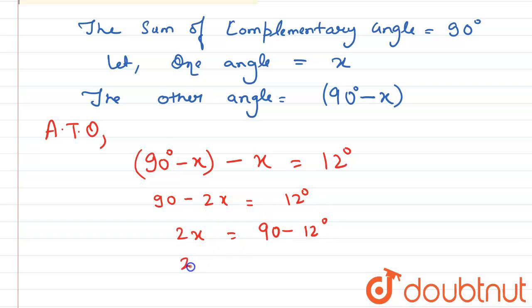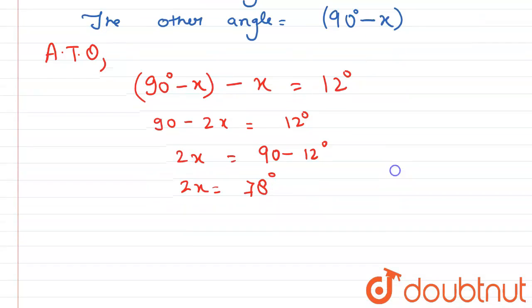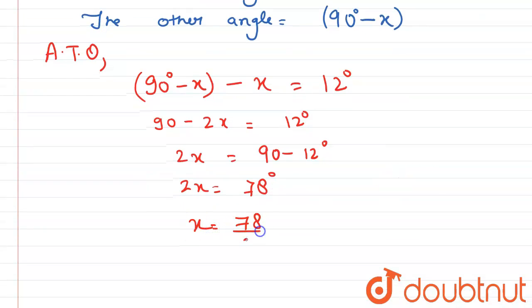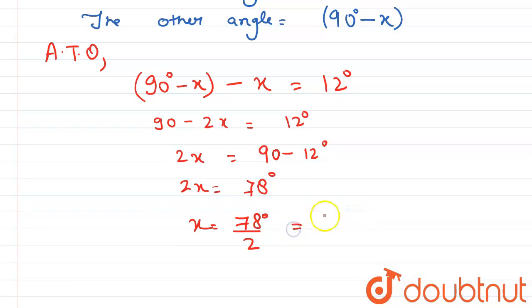So here 2x is equal to 78 degrees, so x is equal to 78 divided by 2 equals 39 degrees.